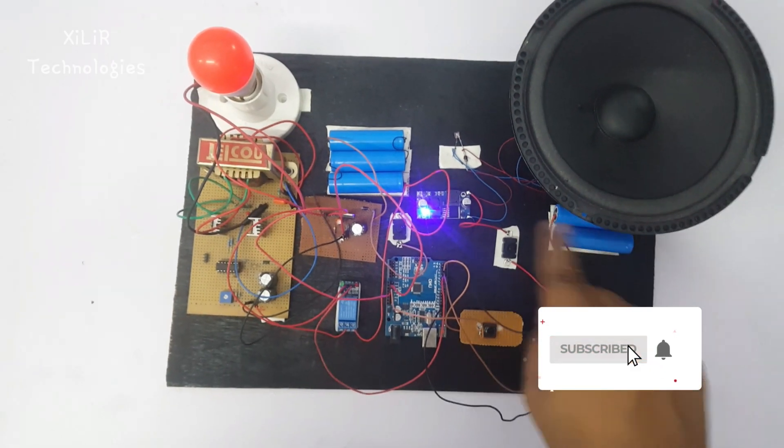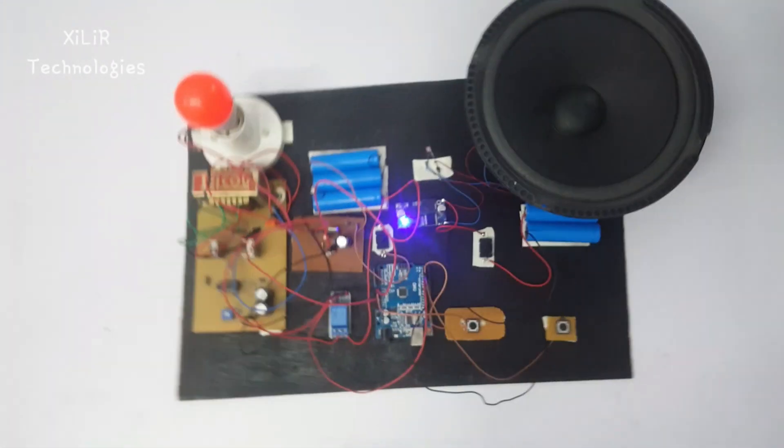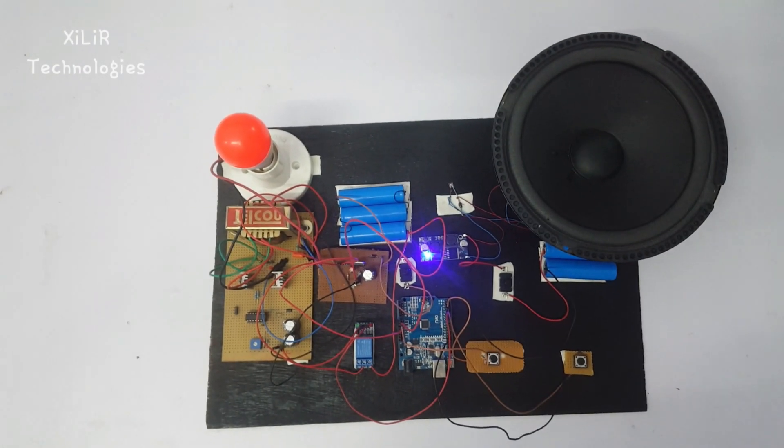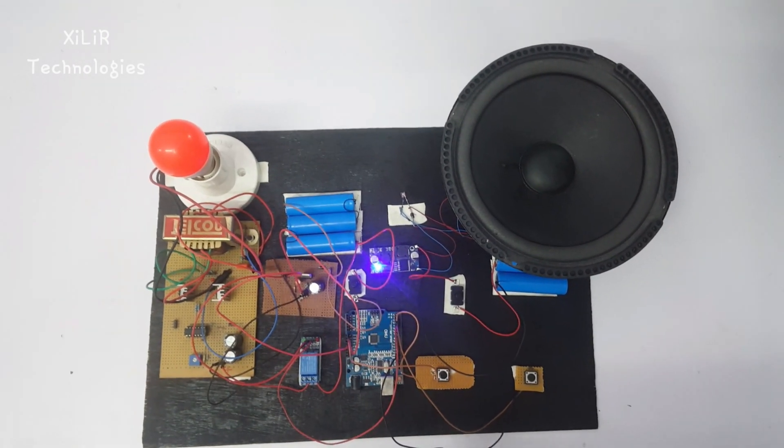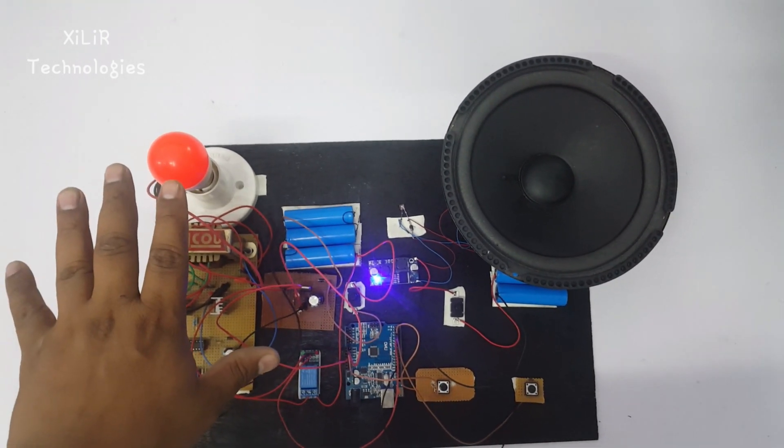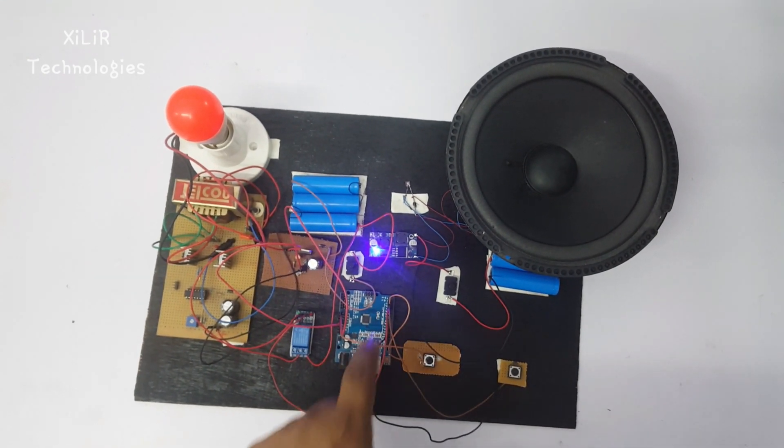After that, it is giving 15 volt supply to the rechargeable battery for the inverter. This 15 volt supply from the booster module can go up to 30 volts. It is given to the 12 volt rechargeable battery, which is connected with the inverter, and the inverter is connected to the relay module.